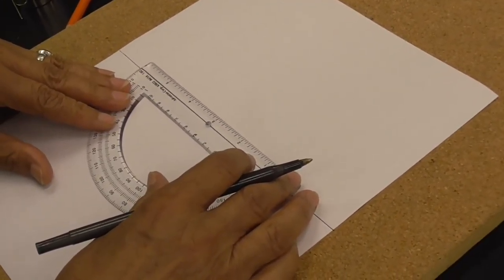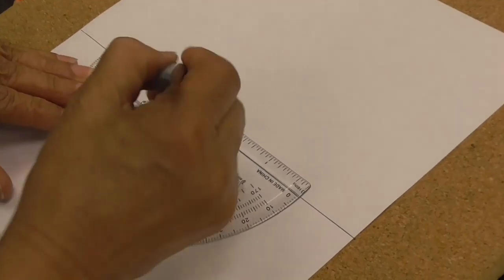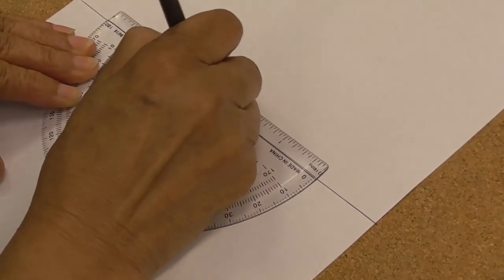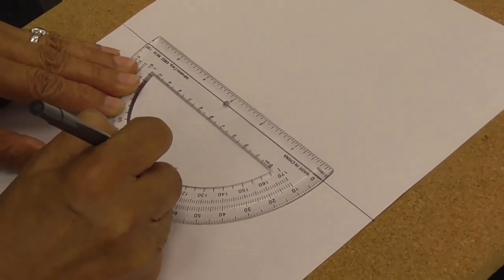Now I'm using the protractor. I put it at the center of this, this dot here. And then I select 90 degrees.